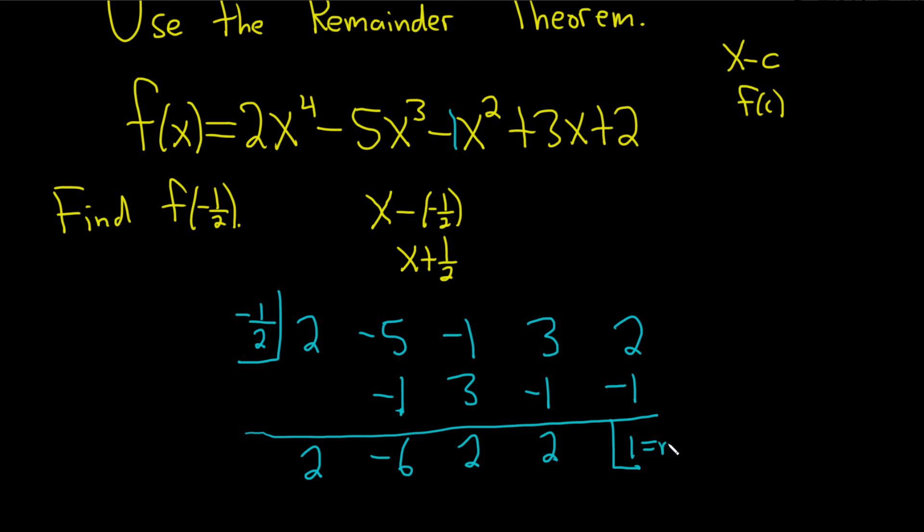And that's the remainder. This is the remainder. How nice. What a nice answer. So this means that f of negative 1 half, well, by the remainder theorem, it's the remainder when we divide by x plus 1 half. So this is just 1. That's it.